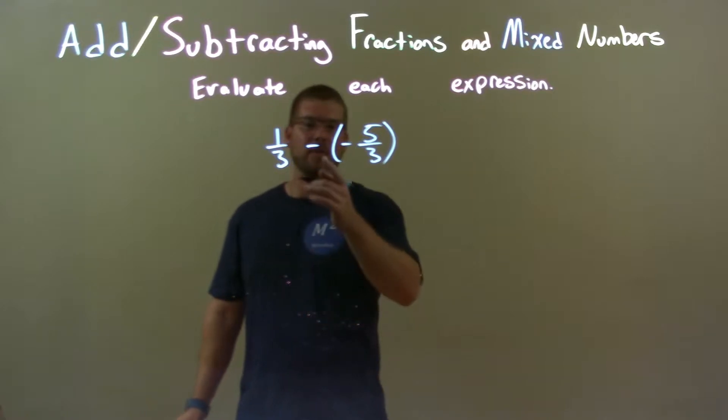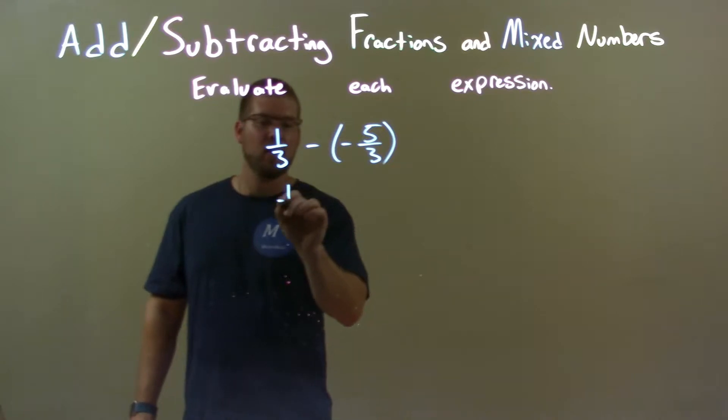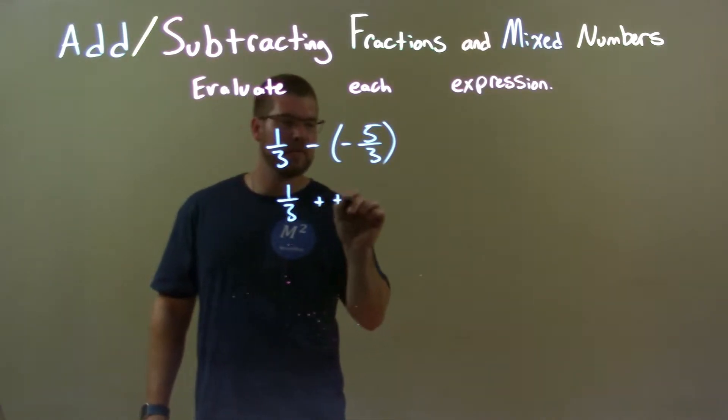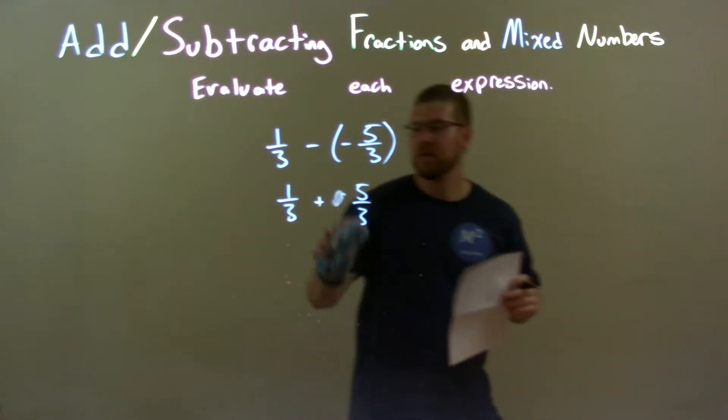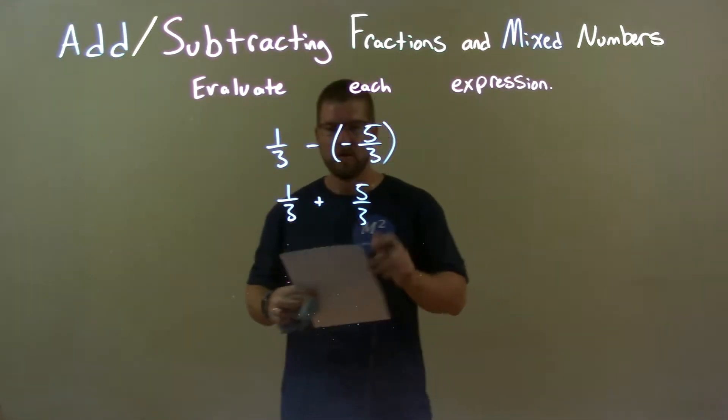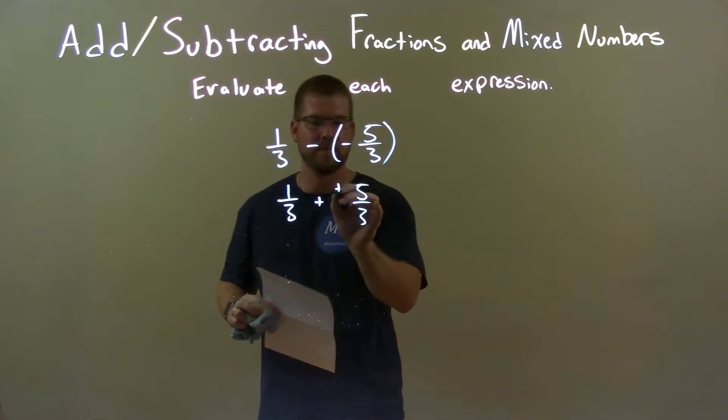Well, one thing we see is subtracting a negative is the same thing as adding a positive. So let's do that. We have one-third plus a positive five-thirds. Let me make that a little nicer looking there. So, plus a positive.